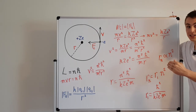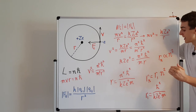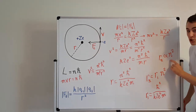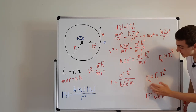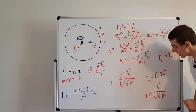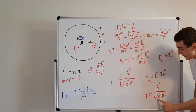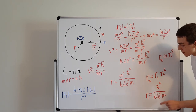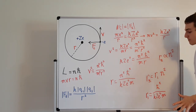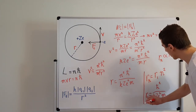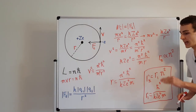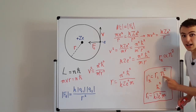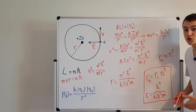Another important observation: setting Z equal to 1 in this expression gives the Bohr radius, which is about half an angstrom. The takeaway message is that the radius for the nth energy level is proportional to n², where n is a positive integer: 1, 2, 3, 4, 5, 6, and so on.